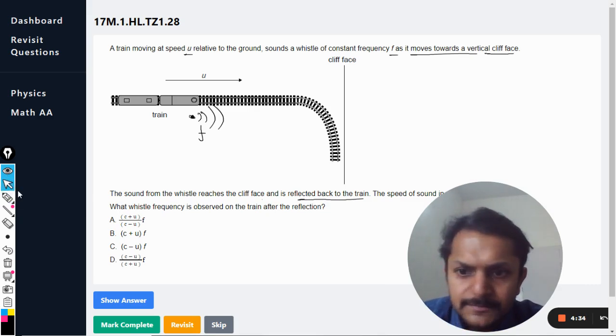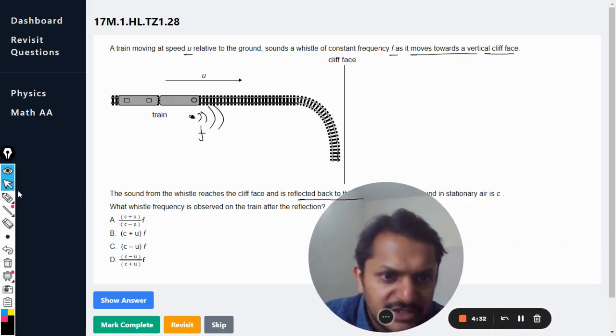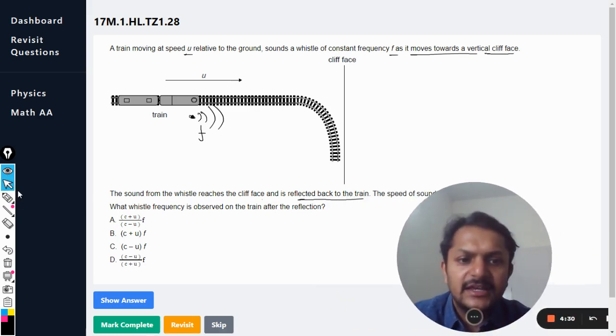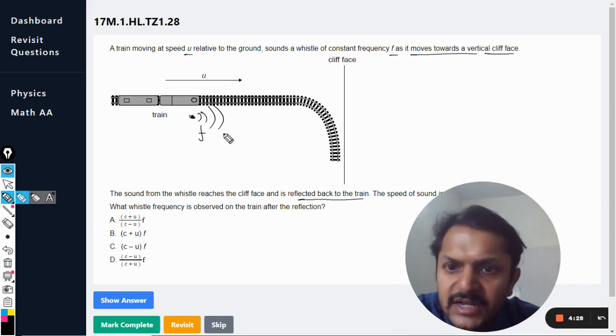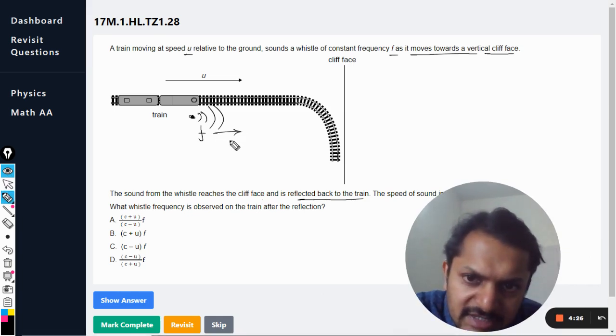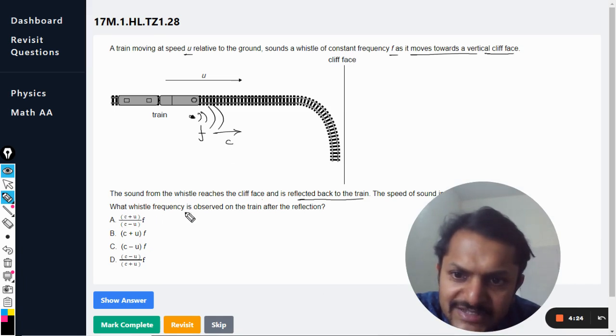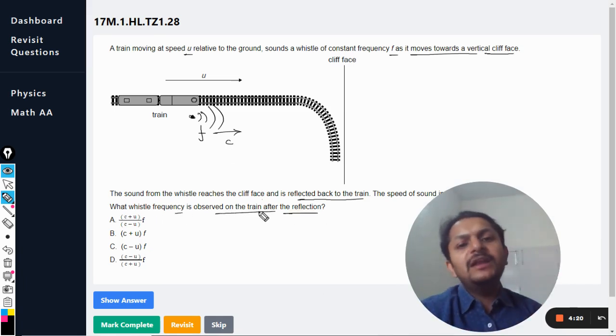The speed of sound in stationary air is c, so this can be taken as the speed of sound is c. What whistle frequency is observed on the train after the reflection? So my dear students, this is a very special case of the Doppler's effect.